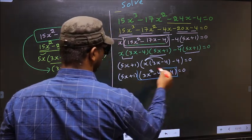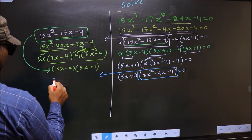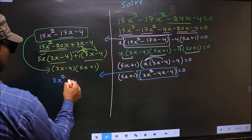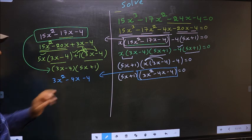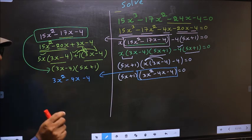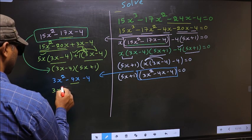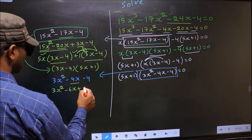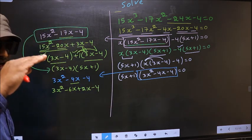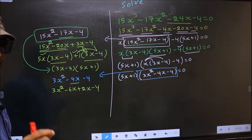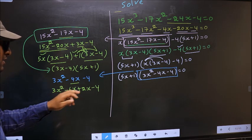Now we got another quadratic. I will factorize the quadratic: 3x² minus 4x minus 4. To factorize this, we should split the middle term minus 4x. In place of minus 4x, now I write minus 6x plus 2x minus 4. Directly, I have split minus 4x to minus 6x plus 2x.